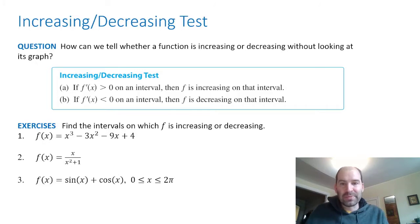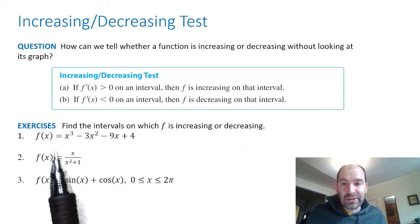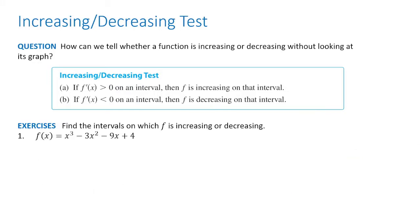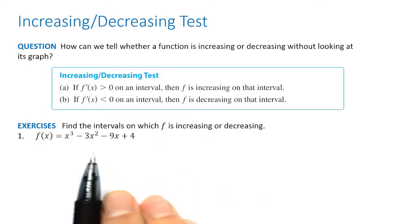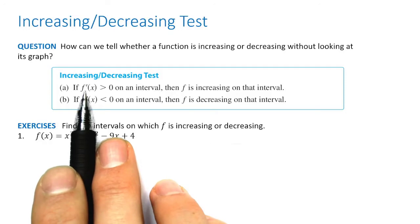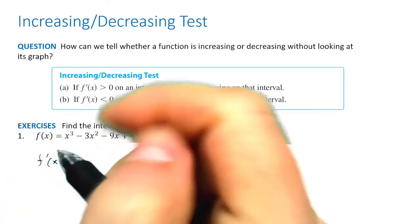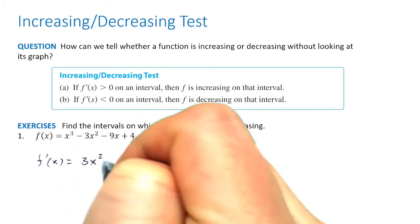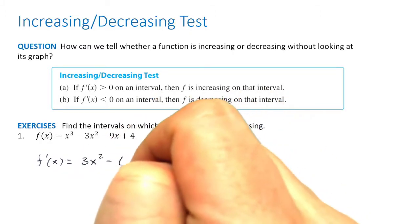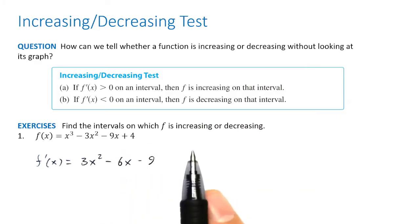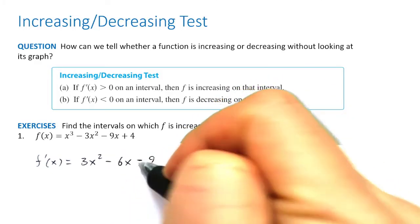Find the intervals on which f is increasing or decreasing. We're going to do it analytically using the increasing-decreasing test, so we need to compute the derivative. f prime: the derivative of x cubed is 3x squared, the derivative of 3x squared is negative 6x, the derivative of negative 9x is negative 9, and the derivative of the constant 4 is zero. So f prime equals 3x squared minus 6x minus 9.